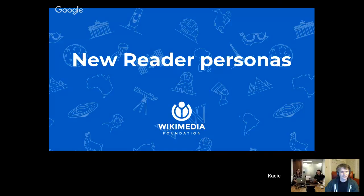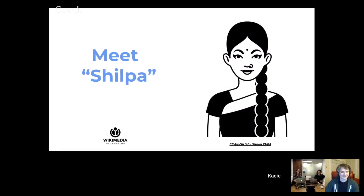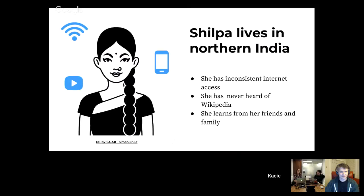That was a long time to look at this blue slide. I will introduce you to two of the personas that we created during the new readers research. So this is Shilpa. This is not a specific person — this is just a character made up of characteristics that we saw during our interviews with many people in India. It's not representative of all the people in India; it's just this sort of type of person. Shilpa lives in northern India, she has inconsistent Internet access, she's never heard of Wikipedia, and she learns things from her friends and family — they send her group texts about movie stars they're interested in or different kinds of news and information they care about.